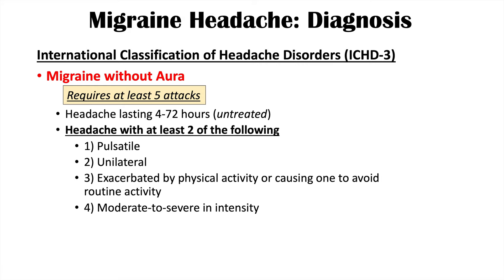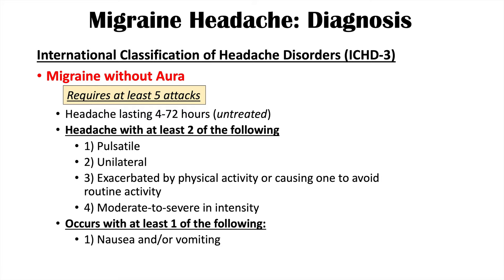Additionally, the headache must occur with at least one of the following: nausea and/or vomiting, or photophobia and phonophobia. So to summarize: a time requirement, at least two headache characteristics, at least one associated symptom, and at least five attacks — all required to diagnose migraine without aura.